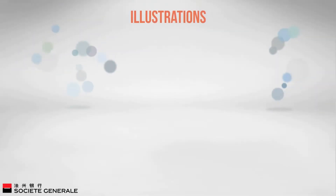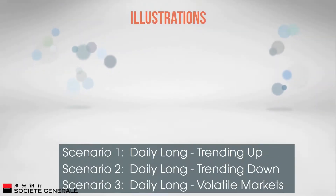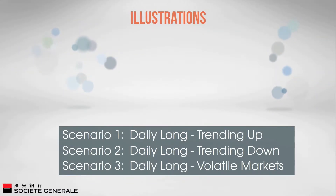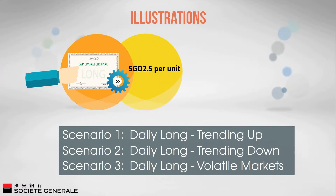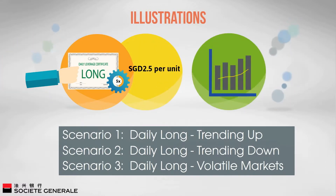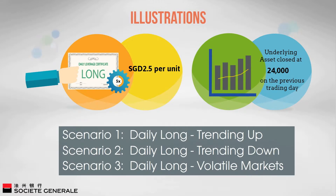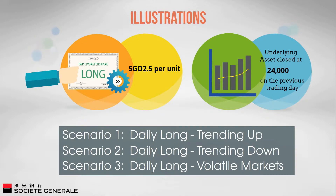In the following three illustrations, we assume the investor purchases a five times daily long at 2.5 Singapore dollars per unit, and the underlying asset closed at a level of 24,000 on the previous trading day. Please be reminded that the figures used in these illustrations are given for purely indicative purposes and have not taken costs and fees into account.